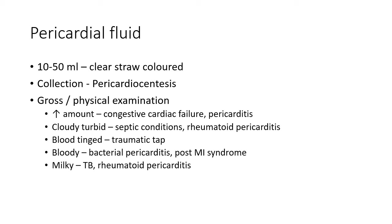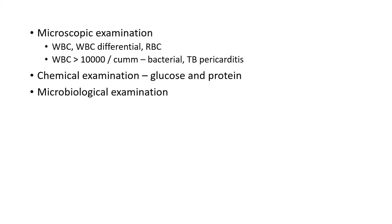Cloudy or turbid pericardial fluid indicates septic conditions or rheumatoid pericarditis. Blood-tinged pericardial fluid suggests a traumatic tap, but grossly bloody fluid indicates bacterial pericarditis or post-myocardial infarction syndrome. Milky effusion is an indication of tuberculosis or rheumatoid pericarditis.